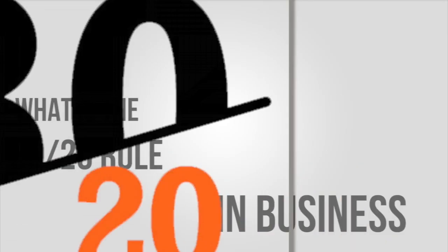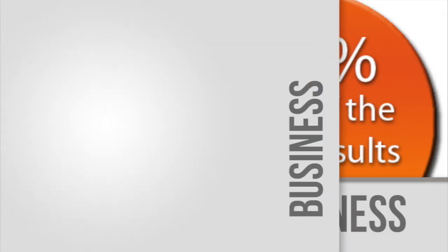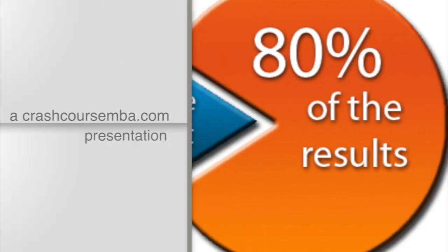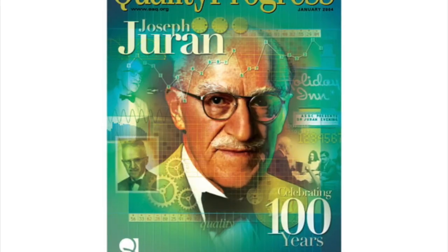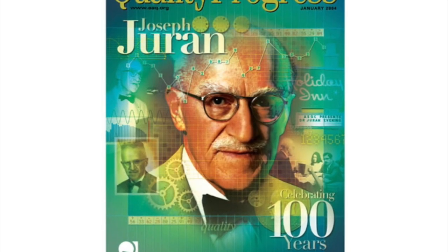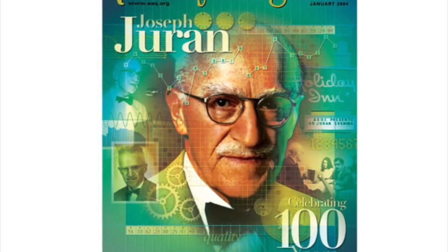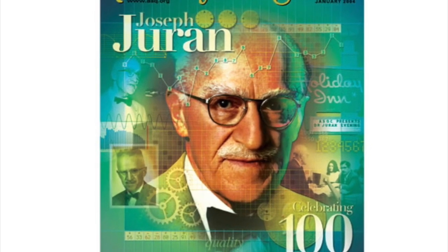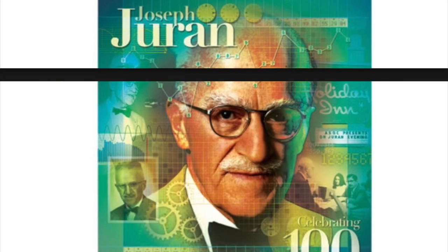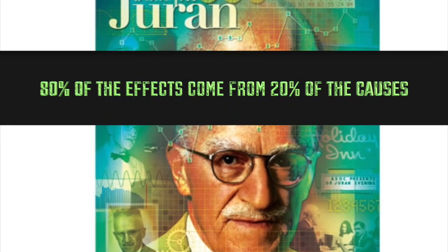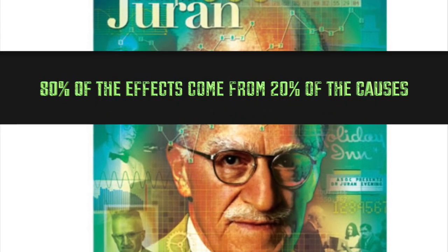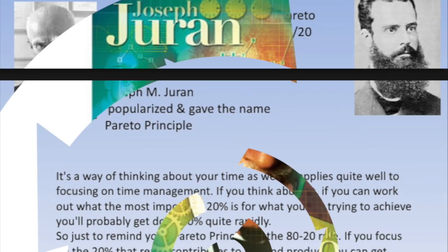What is the 80-20 rule in business? The business management consultant Joseph Juran made the assertion in 1941 that 80% of effects come from 20% of the causes.